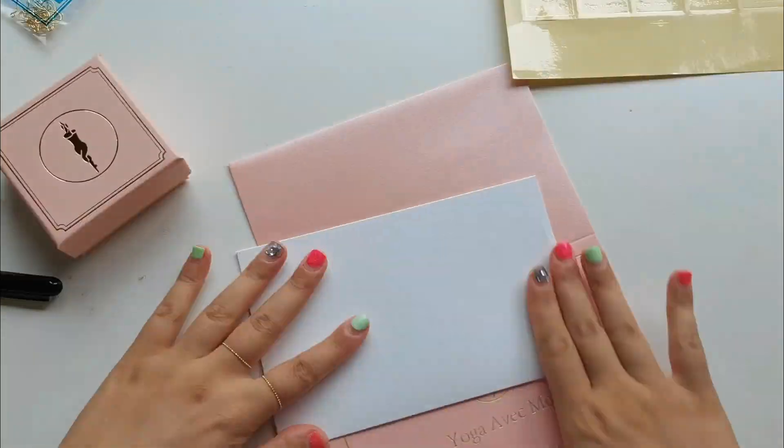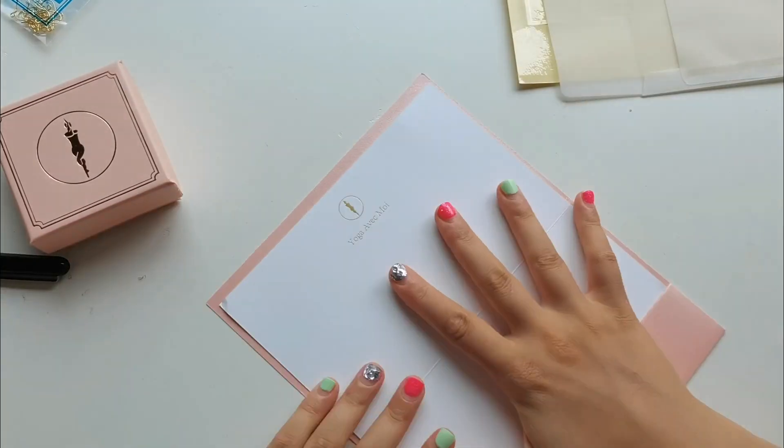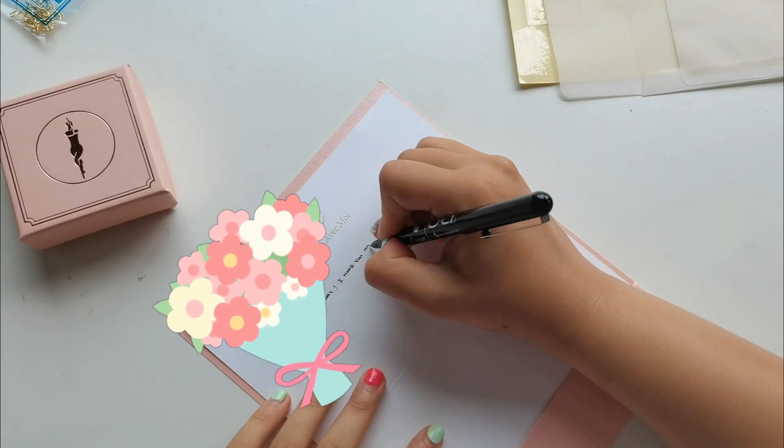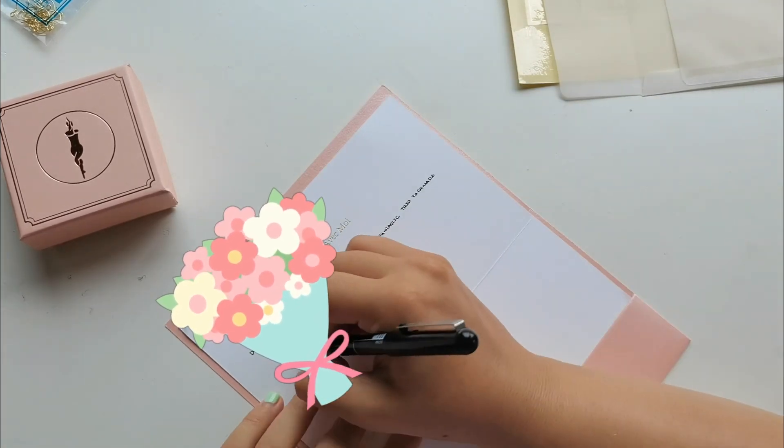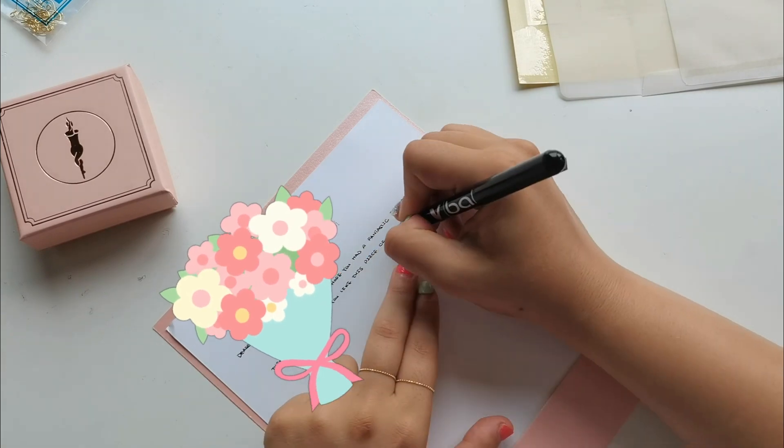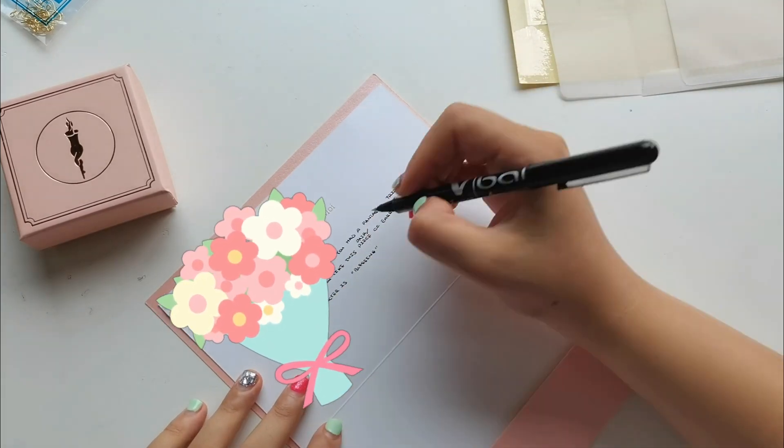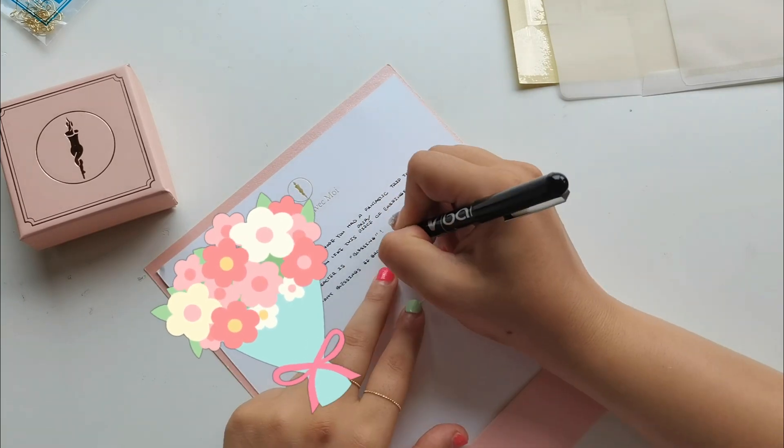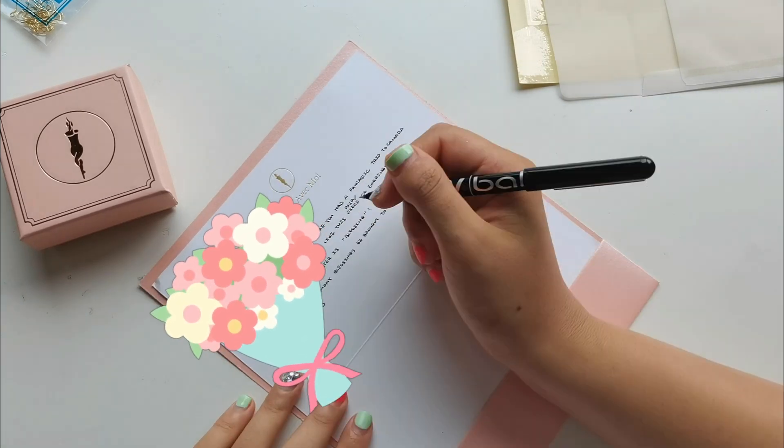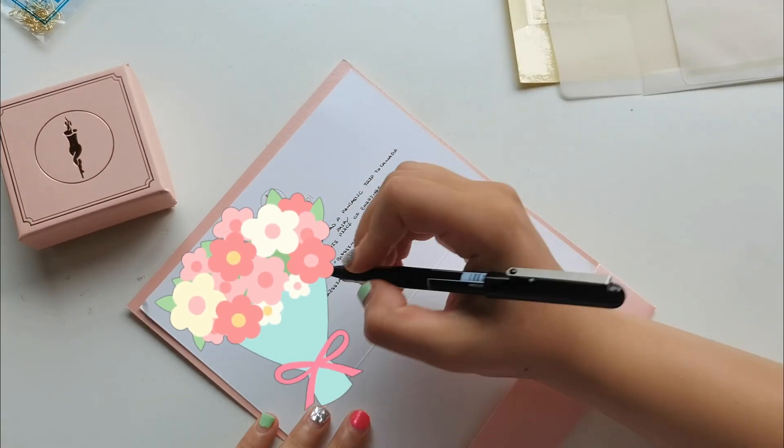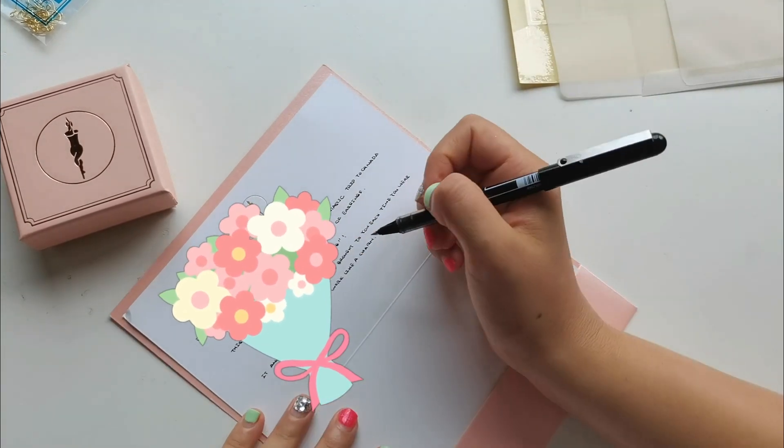This is probably one of my favorite parts of making the earrings or actually writing the letters to the person who is about to receive them. I always usually write a couple notes. This is usually what people say is the highlight of them receiving Yoga Avicomone jewelry, is reading the notes, and they always usually send me a picture of it, of both the earrings and the note that I send. And it always makes me super happy.